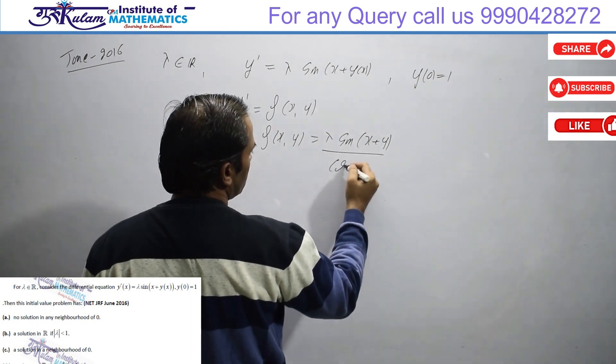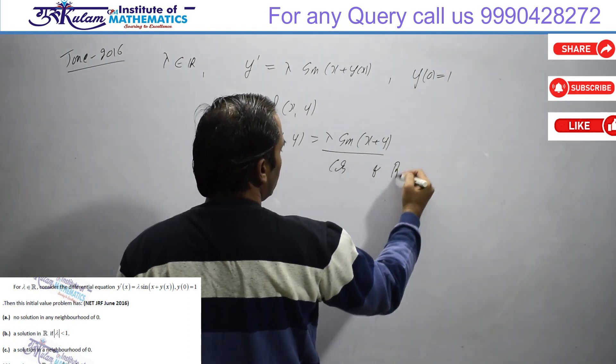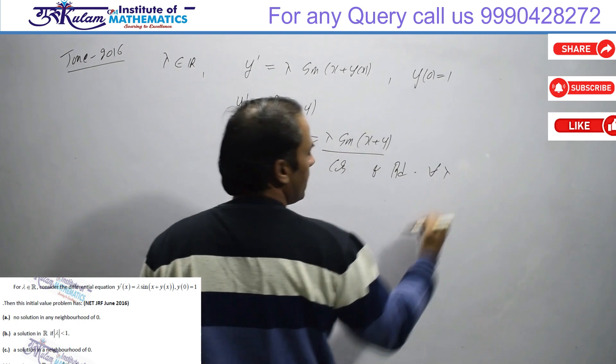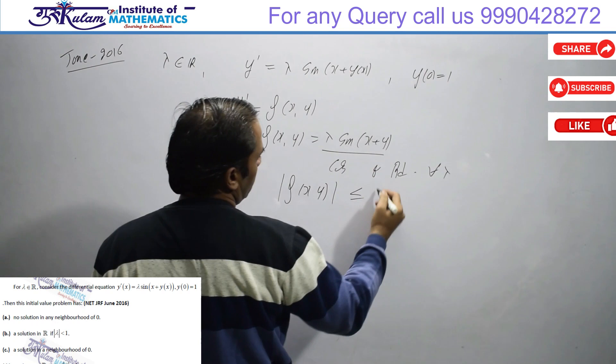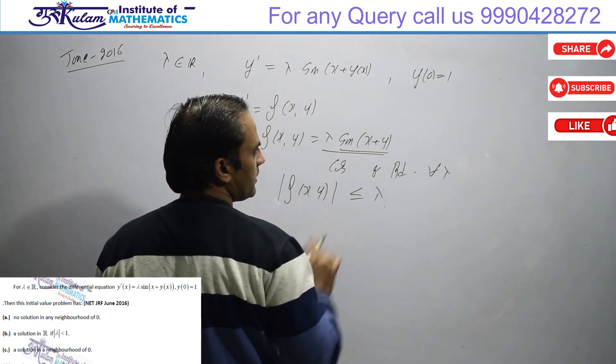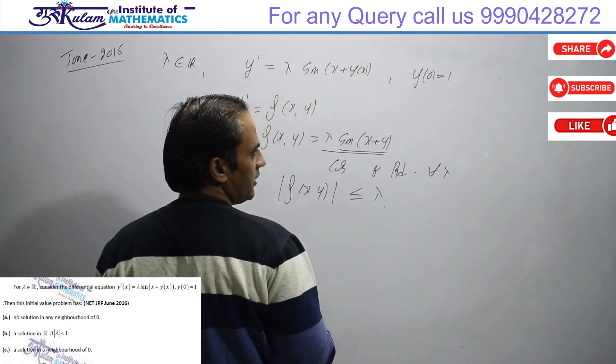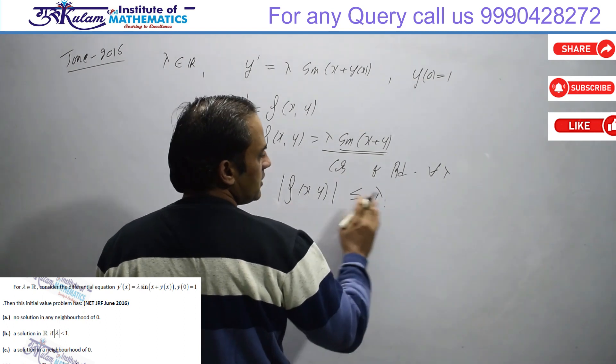The function is continuous and bounded for every lambda. If I take the supremum of f(x,y), it will be lambda because sin(x+y) has modulus less than or equal to 1, so this is bounded.